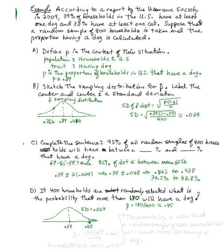To find that probability, we need to find the z-score. The z-score is the value minus the mean, divided by the standard deviation: (0.45 − 0.39) ÷ 0.024, which comes out to 2.5. So this sample proportion of 0.45 is two and a half standard deviations above the mean of 0.39.